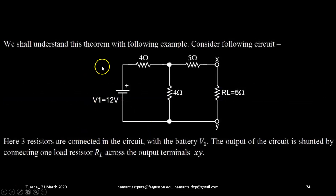Let us understand this theorem with the following example. So consider the following circuit. Here three resistors, 4 ohm, 5 ohm and again 4 ohm are connected in the circuit with battery V1 of 12 volt as shown. The output of the circuit is shunted by connecting a load resistance RL across the terminals X and Y. RL is of having value 5 ohms.